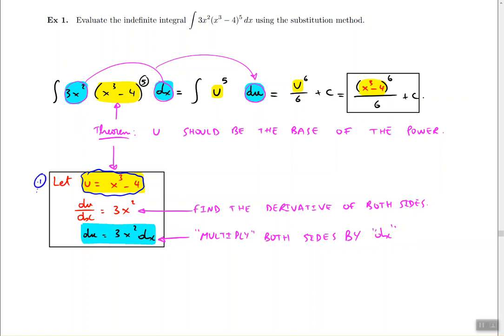First, step one: decide what U is. Then find the derivative. Then multiply both sides by dx so that your variables U are isolated from your variables x. Once you do steps one, two, three, you go back to the original problem and start making your selections.